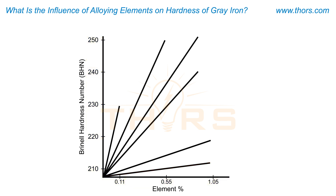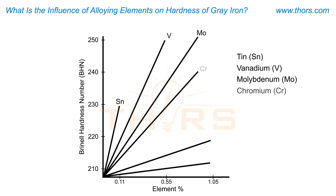The elements used in this example are tin, vanadium, molybdenum, chromium, nickel and copper. Very small quantities of tin — even less than 0.1% — increase the hardness levels to approximately 230 Brinell.